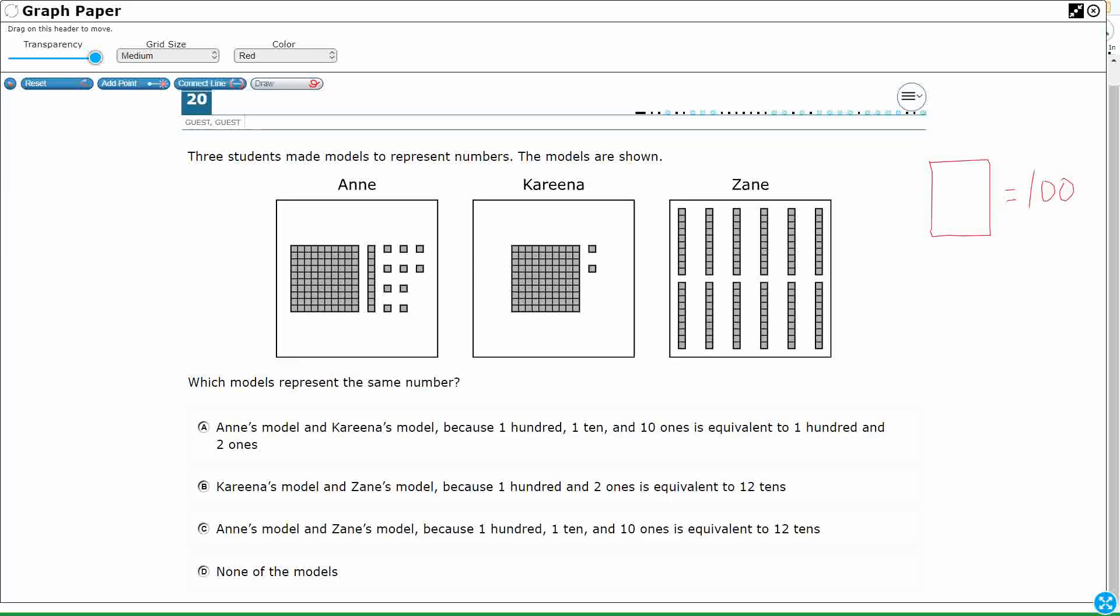They equal 100. Now, if you want to actually count, we've got 1, 2, 3, 4, 5, 6, 7, 8, 9, 10 across. There's also 10 down. So really, it's 10 times 10.